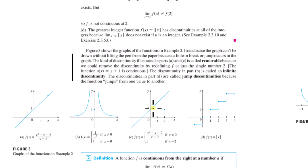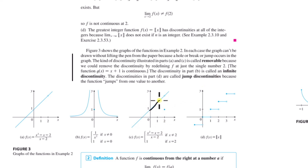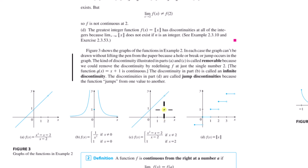Going back to that same function from the first part — they define the hole at x = 2 to be equal to 1. This is still a discontinuity because you have to stop, pick up your pen, and continue. But this is a removable discontinuity, because I could just redefine f(2) to be 3 and I've removed the discontinuity.